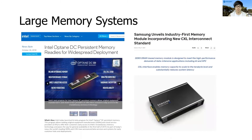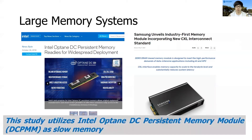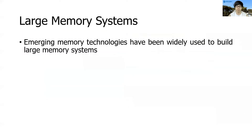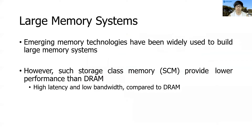Recently, Intel and Samsung introduced a new type of memory to cope with the limited DRAM capacity problem. These devices can be utilized as slow memory to build large-scale memory systems. We used Intel's Optane DC Persistent Memory module as slow memory and conventional DRAM as fast memory for large memory machines. Such storage class memory can be a viable solution to increase capacity, but there is a significant performance gap between DRAM and SCM in terms of latency and bandwidth. As a result, it is difficult to replace DRAM with SCM completely.